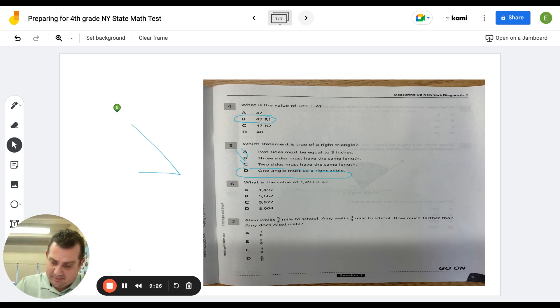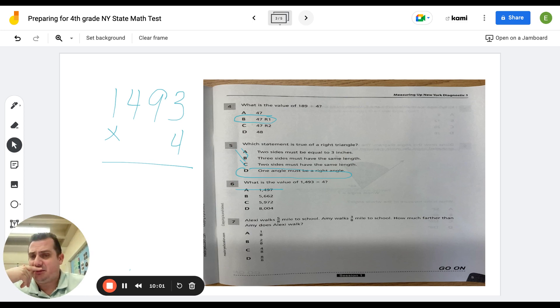Number six. What is the value of 1,493 times four? 1,493 times four. This is straight up computation. Okay. I can eliminate before I begin. Look at A. 1,497. That's if you add. That's if you're adding four. So I don't even have to compute. I know A is wrong. Now 1,493. Even if I rounded that up, which would be wrong to 2,000, right? 2,000 times four is 8,000. Look at D. 8,004 can't even be D because that's nowhere even close when I do my estimation. So it's either B or C. Let's take a look.